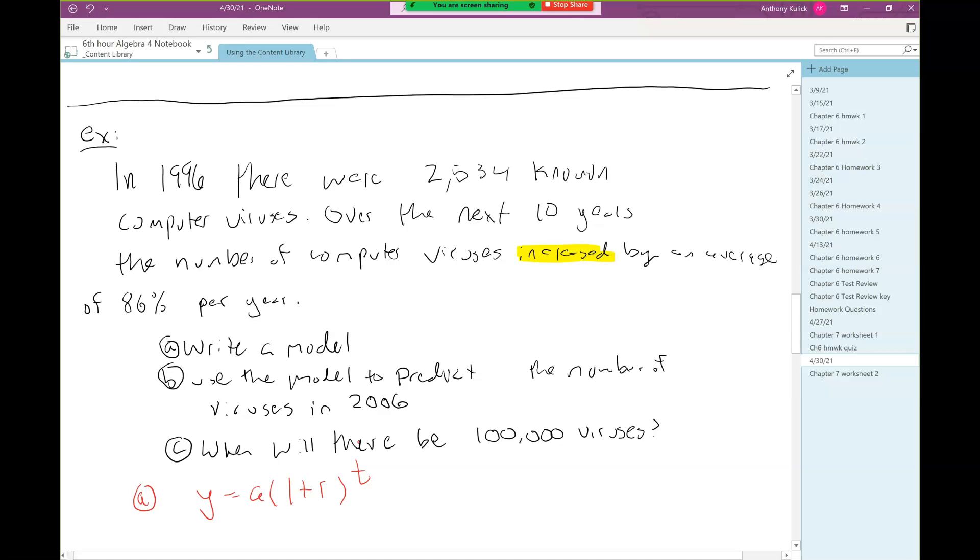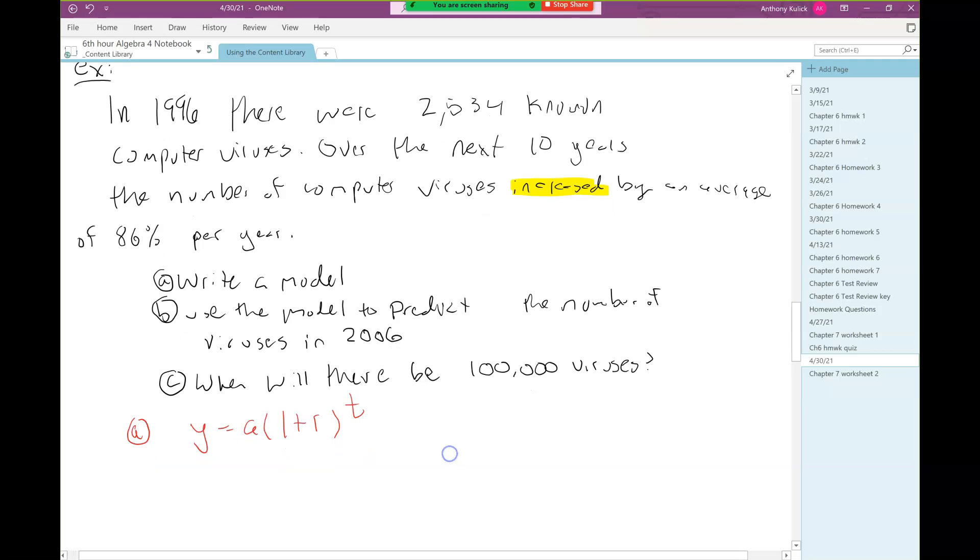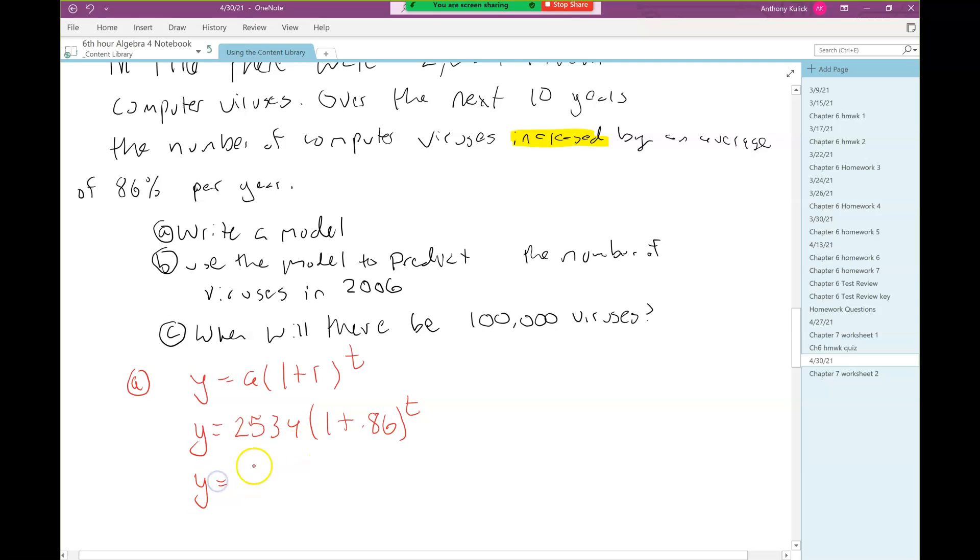a is the initial amount. We're looking for the initial amount of computer viruses, which is 2,534. R is the rate of change, which is 86 percent. Converting to a decimal, we divide by 100, giving us 0.86. I'm going to clean that up by adding 1 and 0.86 to write that as 1.86. There's my model. The 1 is always in the equation for growth and decay.